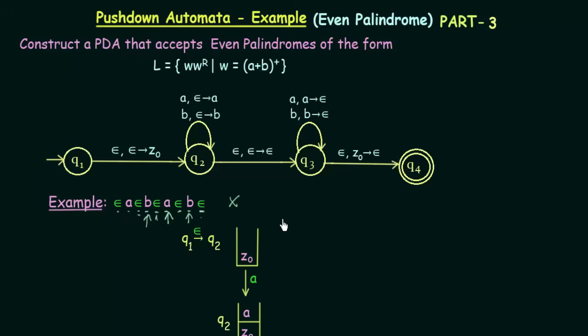This is how a PDA works for rejecting a string. When a string has to be rejected, you will not find any path that leads to the final state, and the stack may never be empty at the end of execution. This string was correctly rejected because it is not an even palindrome. Thank you for watching, and see you in the next one.